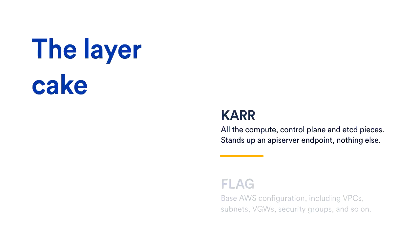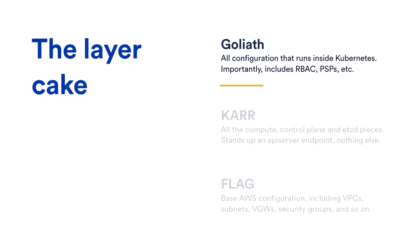The one where most of the magic happens is the CAR, which is probably more familiar to you. This contains all of the compute, the control plane, and the etcd servers that actually persist the cluster state. But the hard rule I wanted to have here is that this stands up the Kubernetes API server endpoint and nothing else — there's no config pushed into the Kubernetes cluster here. It's just the API server, the absolute minimal amount of stuff to bring up the API server. Then in Goliath, that has all the configuration that actually runs inside Kubernetes, which includes all role-based access control and the security stuff that actually lets you schedule things onto the cluster.